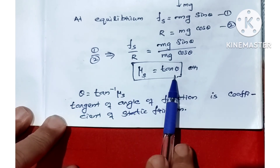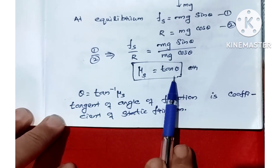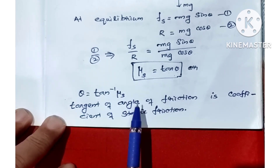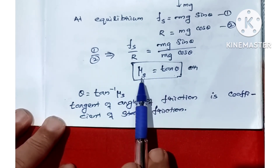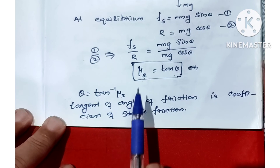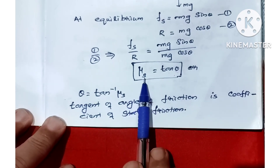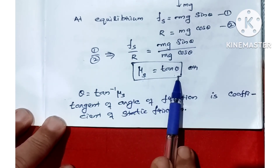Therefore, mu s is equal to tan theta. Why is the coefficient of static friction defined this way? The coefficient of static friction is the...